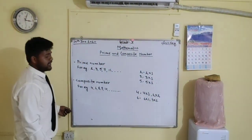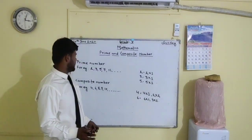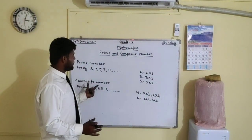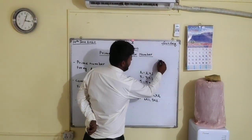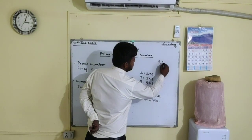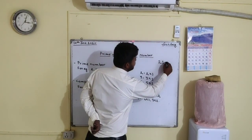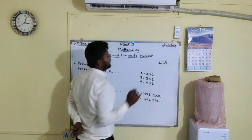So students, now you can differentiate between prime numbers and composite numbers. So tell me — is 21 a prime number or a composite number?